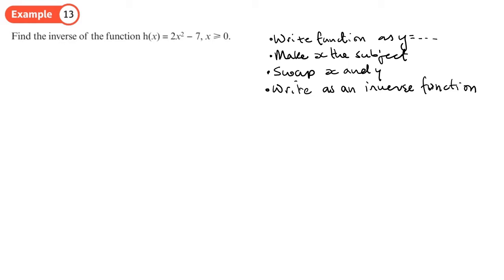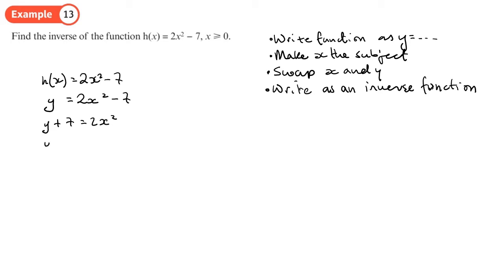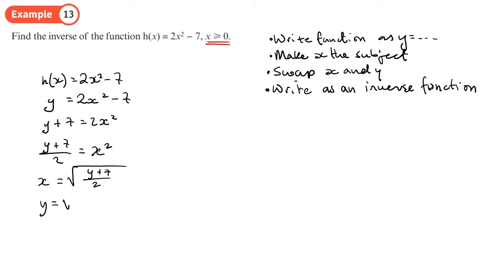For example, h(x) = 2x² - 7. Write it as y = 2x² - 7. Make x the subject: y + 7 = 2x², so (y + 7)/2 = x². The question states x > 0, so we only take the positive square root: x = √((y+7)/2). Swap x and y: y = √((x+7)/2), then write as h⁻¹(x) = √((x+7)/2).